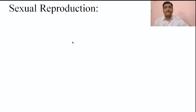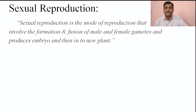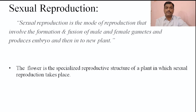Hello students. In the last lecture we discussed about asexual reproduction in angiosperms. Today we will discuss about sexual reproduction in angiosperms. Sexual reproduction is the mode of reproduction that involves the formation and fusion of male and female gametes, producing an embryo and then a new plant. Plants produce male and female gametes by the process known as meiosis. These formed gametes fuse at the time of fertilization to form the zygote and then produce a new individual. That process is generally known as sexual reproduction.